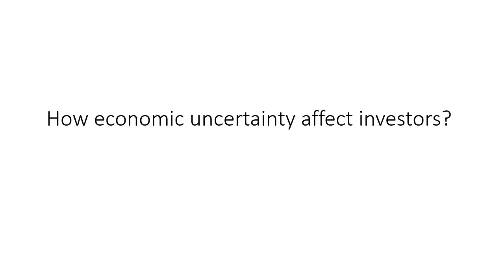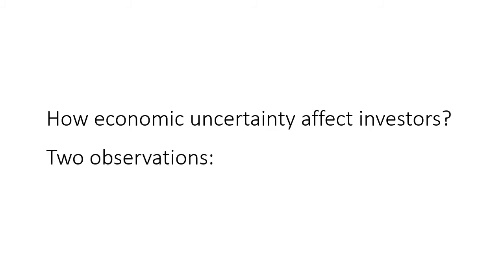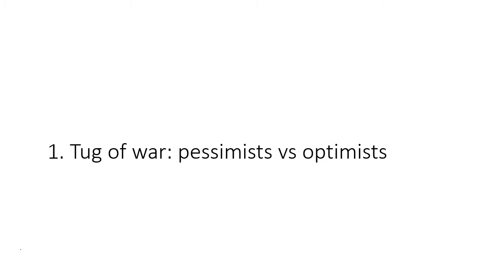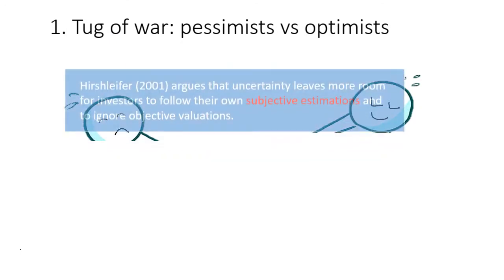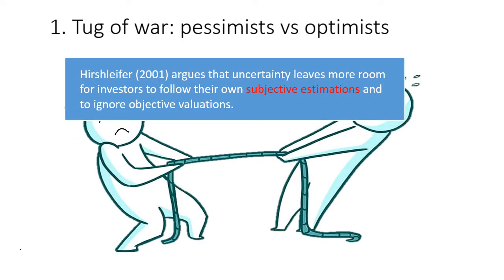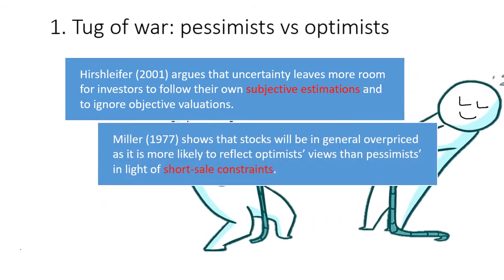How does economic uncertainty affect investors and asset prices? During a period of high economic uncertainty, we normally have two observations. First, the tug of war between optimists and pessimists in the market is intensified. Hirshleifer argues that increased uncertainty leaves more room for investors to follow their own subjective estimations and ignore objective evaluation. This will amplify their behavioral bias.